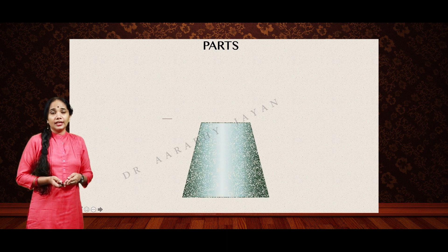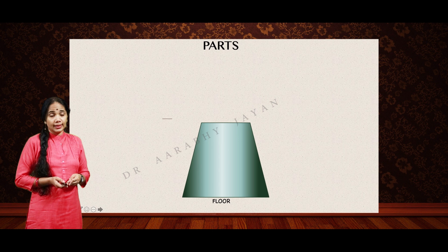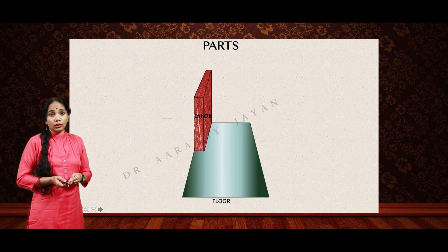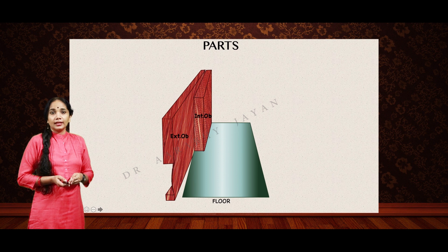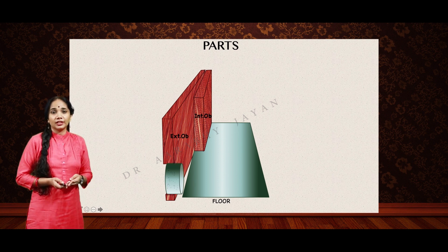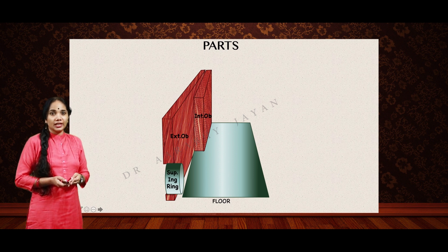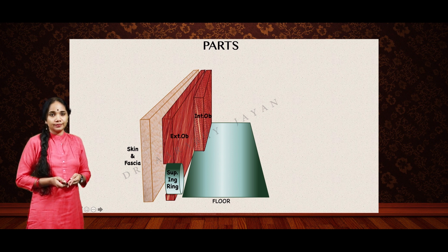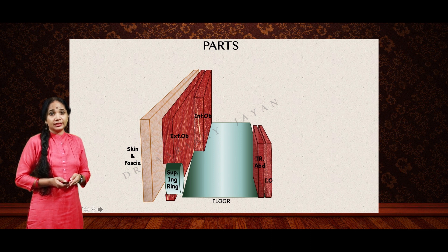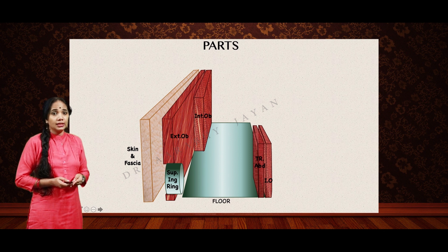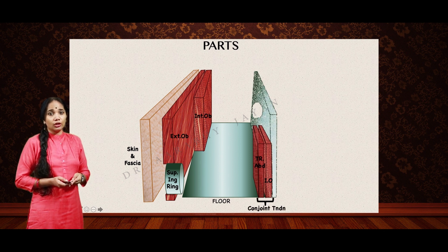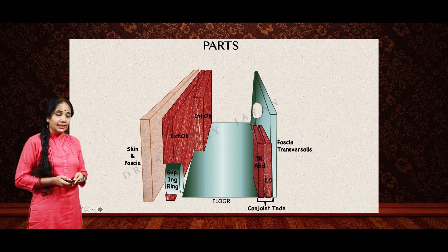The inguinal canal is formed by a floor made up of the inguinal ligament. Its anterior wall has the internal oblique and the external oblique — the defect in the external oblique is called the superficial inguinal ring — and the entire length of the anterior wall is covered by the skin and the fascia. The posterior wall in the medial part is formed by the conjoined tendon, which is the combined fibers of both the internal oblique and the transversus abdominis, but in its entire length it is formed by the fascia transversalis.